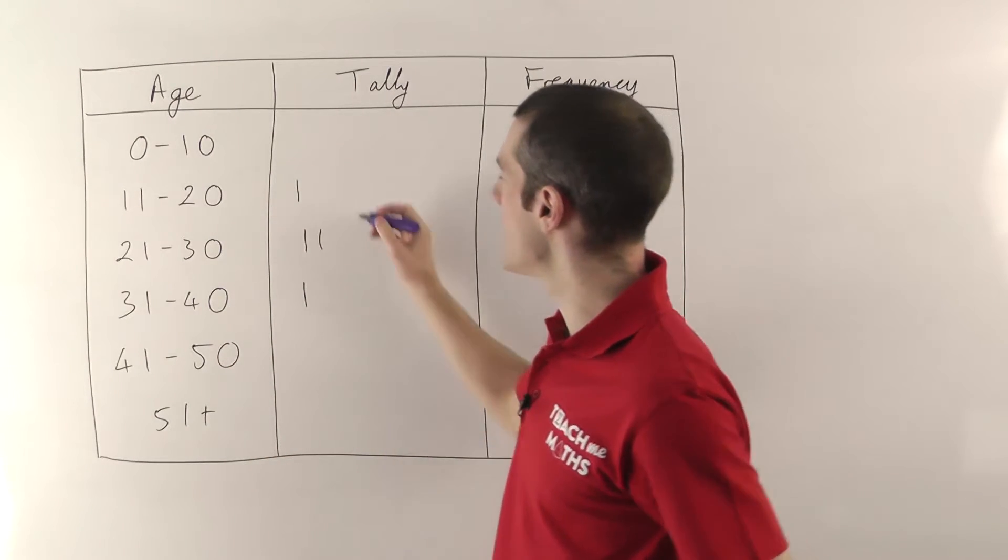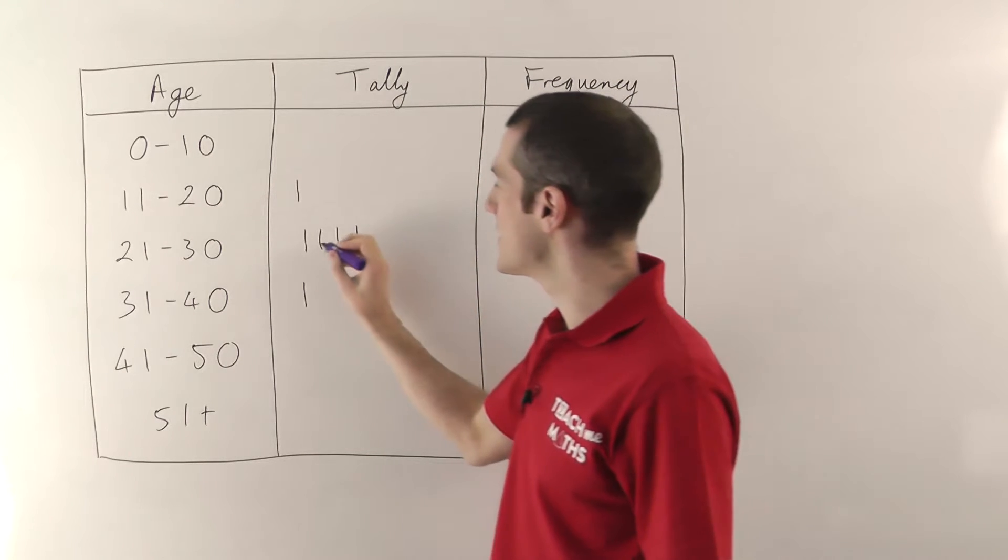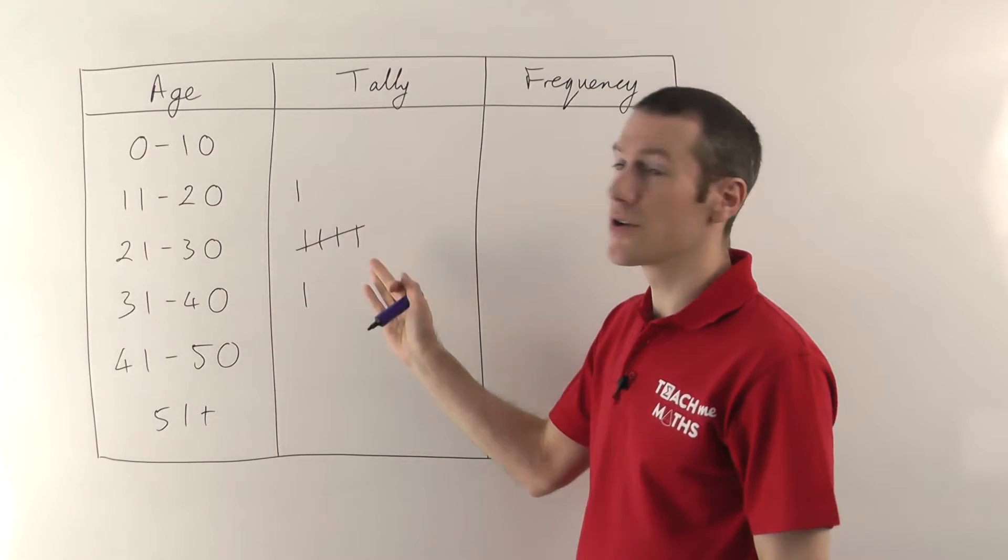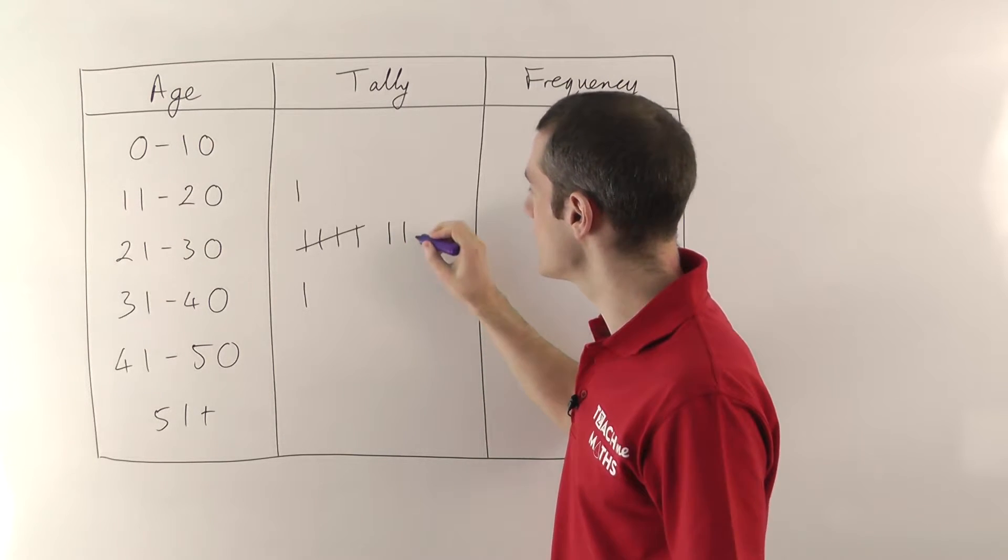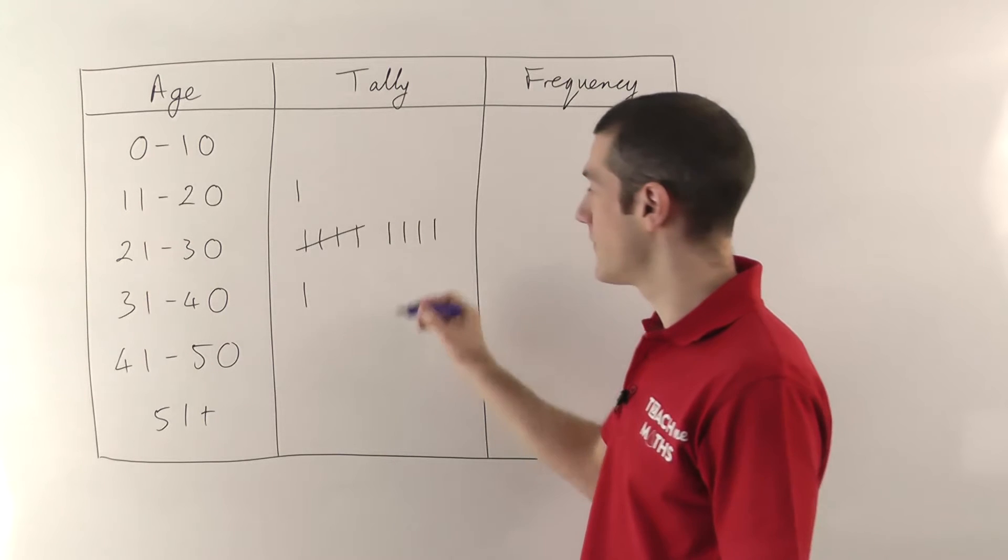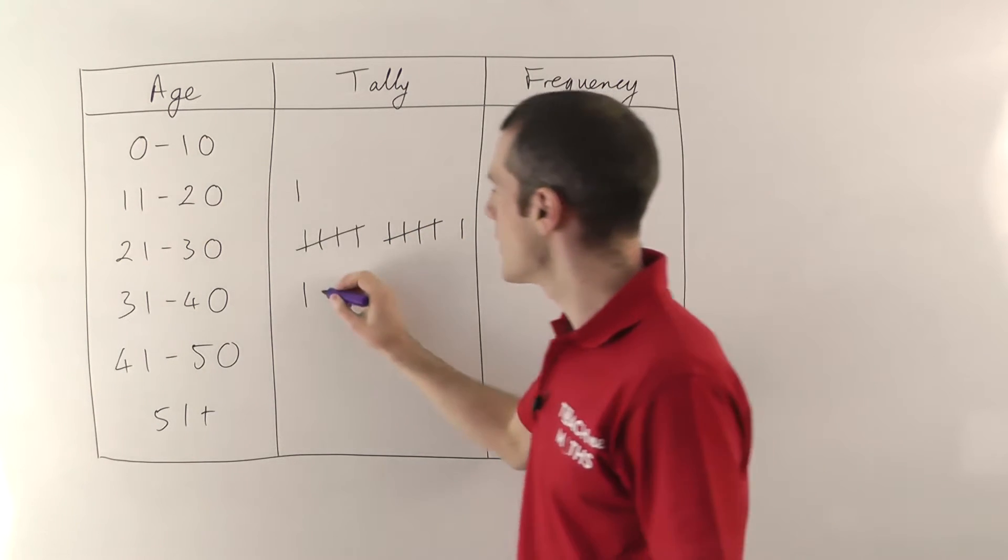Now remember with tally marks, when you get up to five you don't put a fifth line, you put a diagonal line across so that'll be one group of five. And then you carry on doing more. So that'll be six, seven, eight, nine, and then again group of five. That'll be ten, eleven, etc.